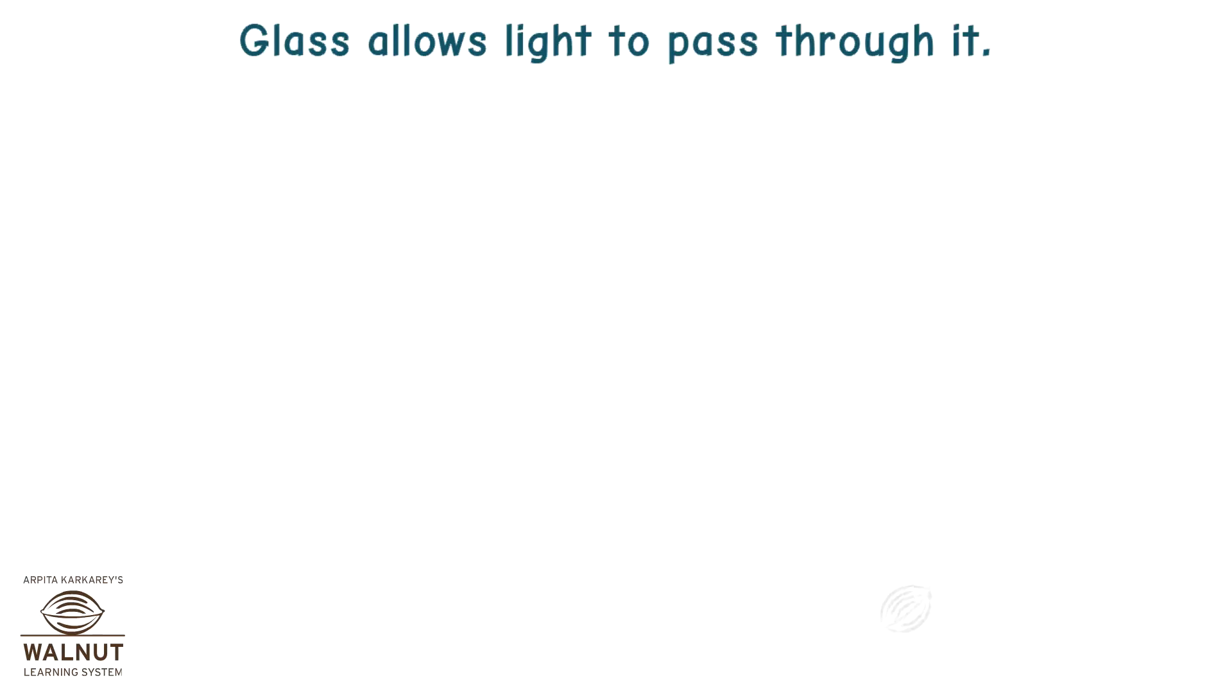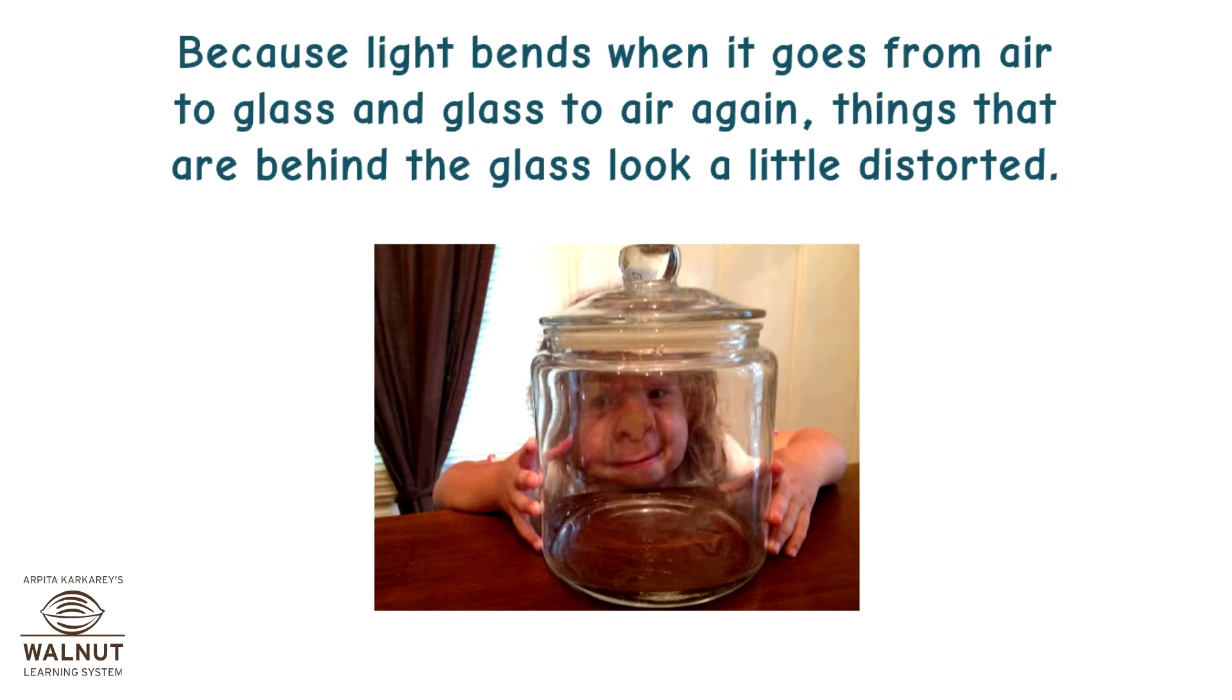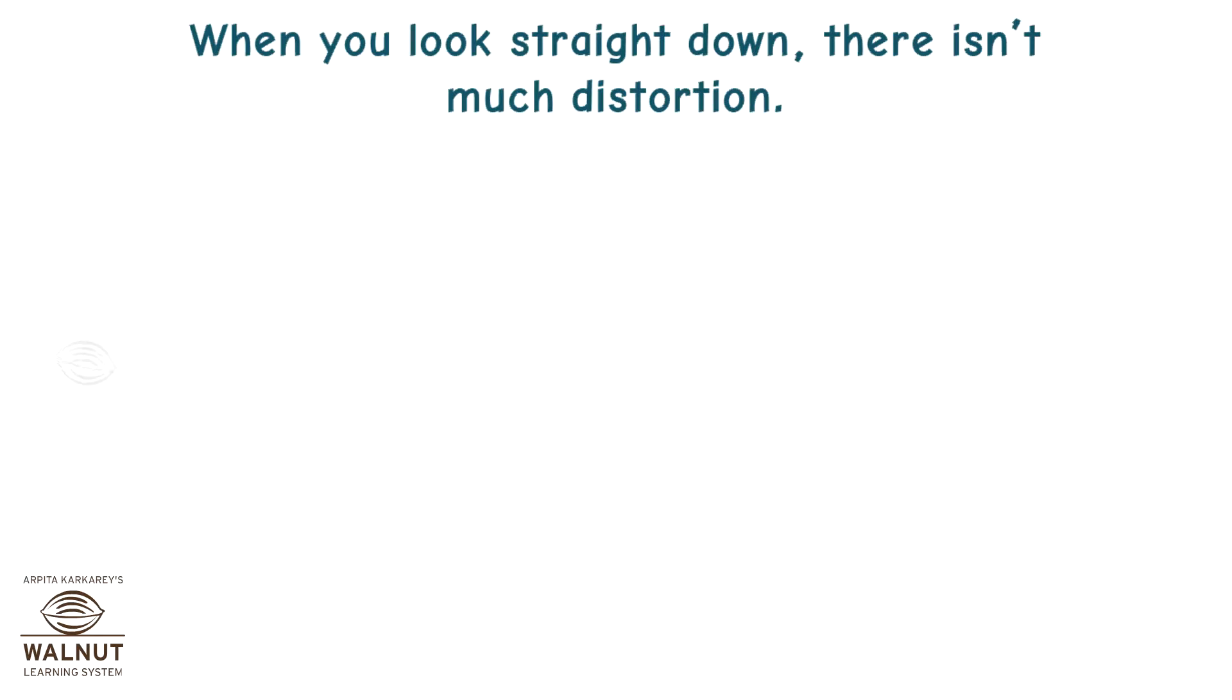Glass allows light to pass through it. Do you have a glass made of glass? Look through it. Because light bends when it goes from air to glass and glass to air again, things that are behind the glass look a little distorted. When you look straight down, there isn't much distortion.